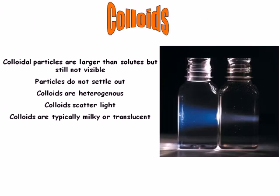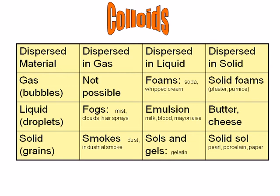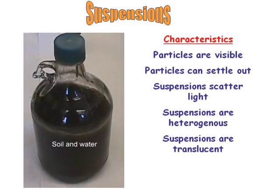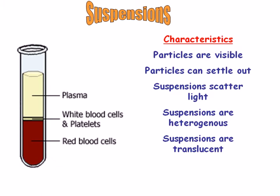Colloid mixtures are heterogeneous. This means that the particles do not scatter evenly throughout the mixture, but they do not settle out. Colloid particles tend to scatter light, and therefore colloids are typically milky or translucent. The particles in suspensions are visible. The particles can settle out and scatter light, and suspensions are therefore translucent. Suspensions are heterogeneous, meaning that the particles do not scatter evenly throughout the mixture. A good example of a suspension in the human body is the elements of blood. Blood is made up primarily of plasma, which is made up mainly of water. Suspended in the plasma are platelets, red blood cells, and white blood cells.